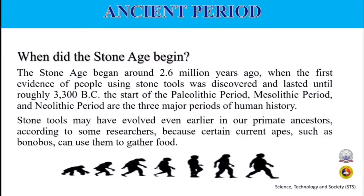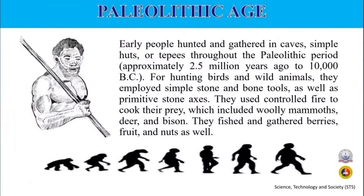According to some researchers, our primate ancestors and certain current apes, such as bonobos, used stone tools in gathering their food. Early people hunted and gathered in caves, simple huts, or tipis throughout the Paleolithic period, approximately 2.5 million years ago to 10,000 BC. For hunting birds and wild animals, they employed simple stone and bone tools, as well as primitive stone axes.